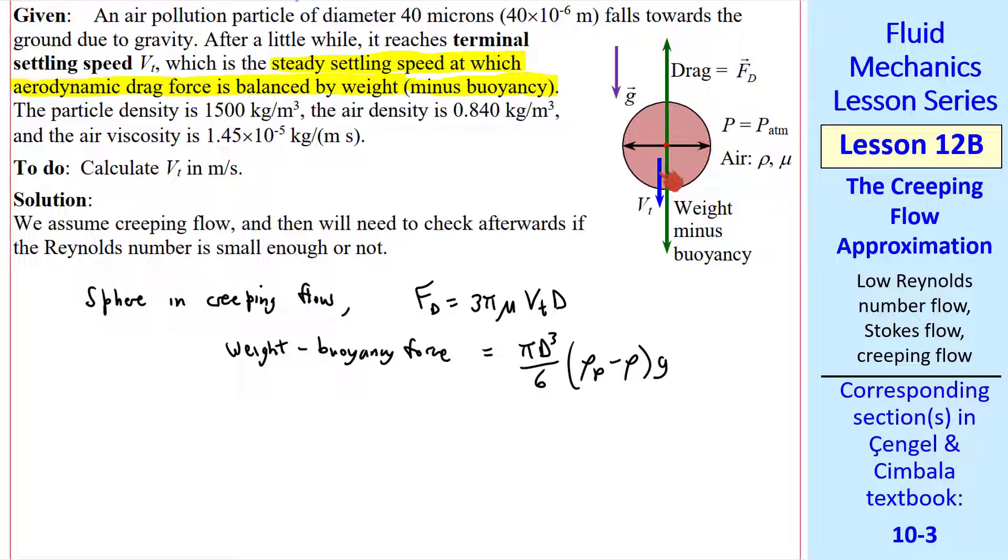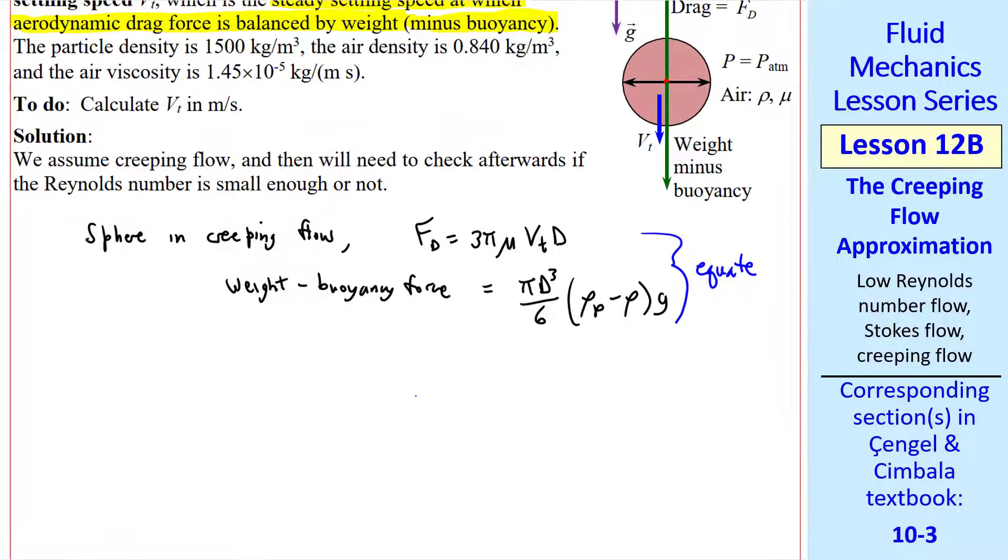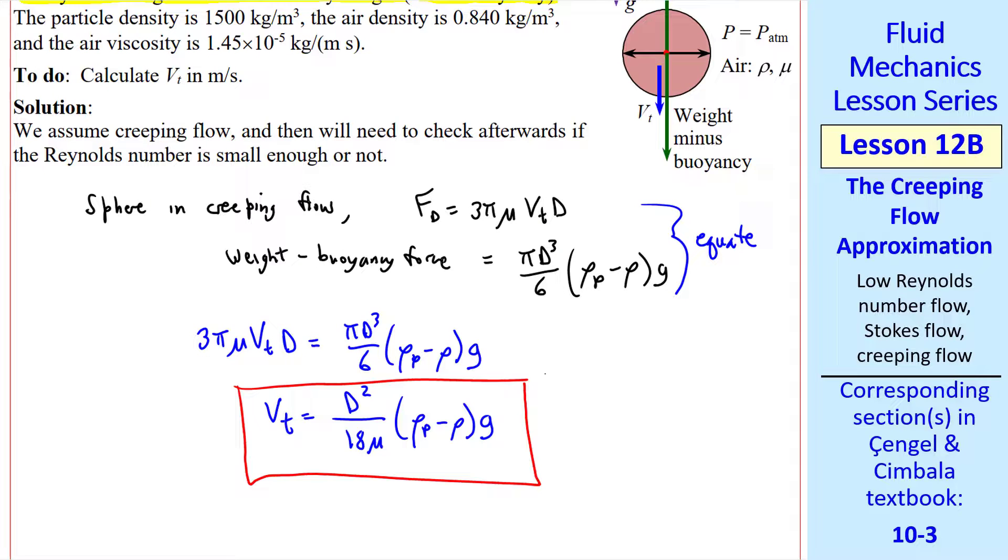This buoyancy force is due to the air that's displaced by the particle as we discussed in a previous lesson. The steady terminal settling speed is when these forces balance. So we equate these and solve for VT, which is our answer in variable form.